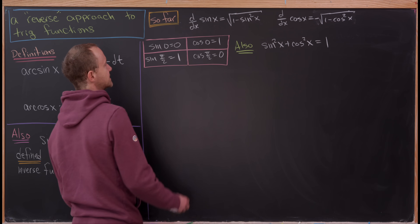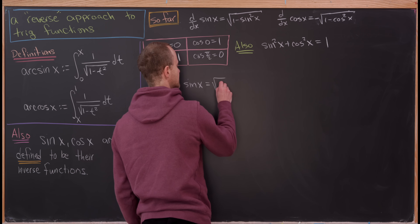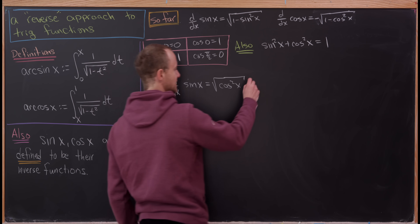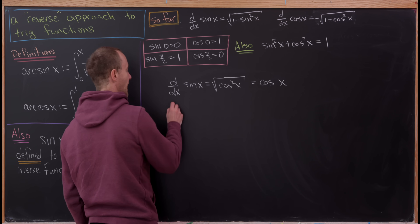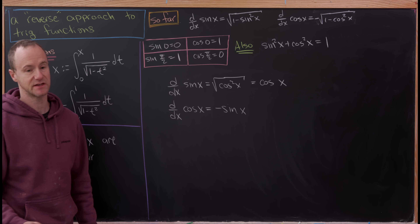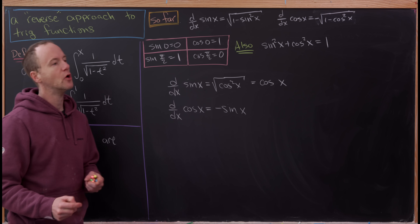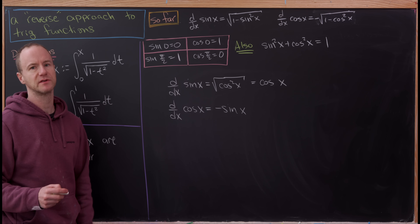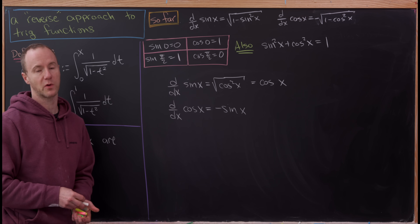Now we can plug this in: the derivative of sine of x equals the square root of 1 minus sine squared x equals the square root of cosine squared x, which is the absolute value of cosine x. Taking the positive root, we get cosine of x. So the derivative of sine of x equals cosine of x. Likewise, the derivative of cosine of x equals negative sine of x. You can get additional values of sine and cosine by deriving double-angle and other multiple-angle identities using everything derived so far — I'll leave that as a homework exercise. And that's a good place to stop.